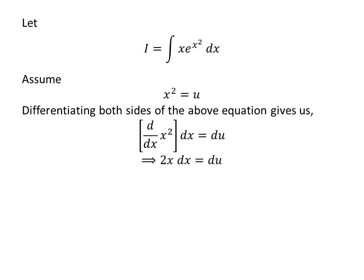As derivative of square of x is 2 times x, so 2 times x times differential of x is equal to differential of u. The above equation implies x times differential of x is equal to half times differential of u, as I have shifted 2 from left to right side of the above equation.